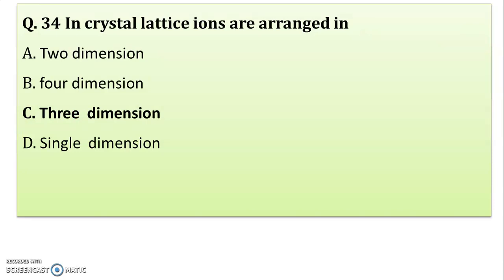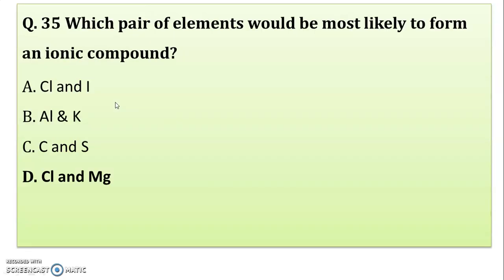In the crystal lattice, ions are arranged in — always remember, crystal lattice is a three-dimensional structure, whereas the unit cell is the smallest building unit. The correct answer for crystal lattice arrangement is three-dimensional. Don't say two-dimensional, four-dimensional, or single-dimensional. Correct answer: three-dimensional structure.